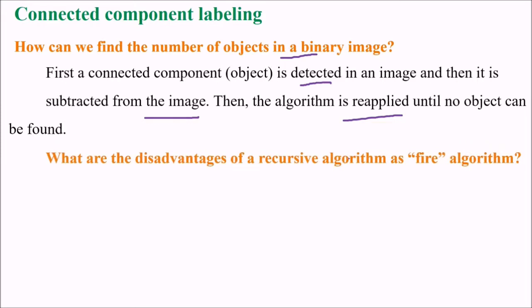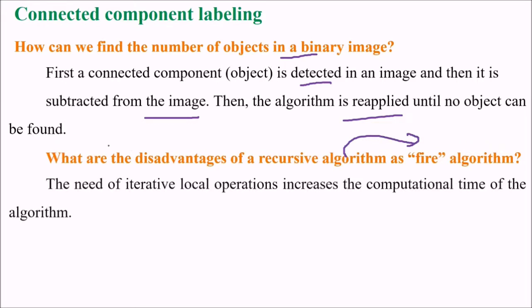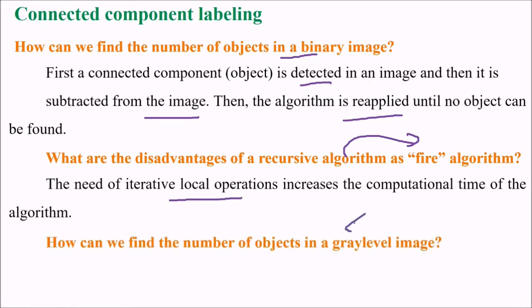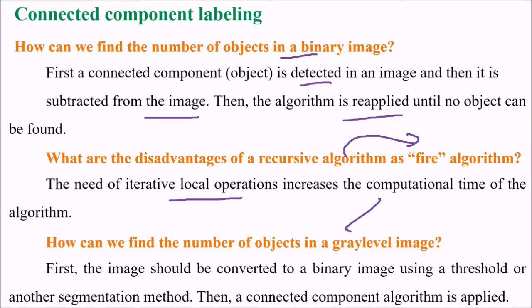What are the disadvantages of recursive algorithms like fire algorithm? The need of iterative local operations increases the computational time of the algorithm. How can we find the number of objects in a gray level image? First the image should be converted into binary image using a threshold or some other segmentation model. Then a connected component algorithm can be applied.